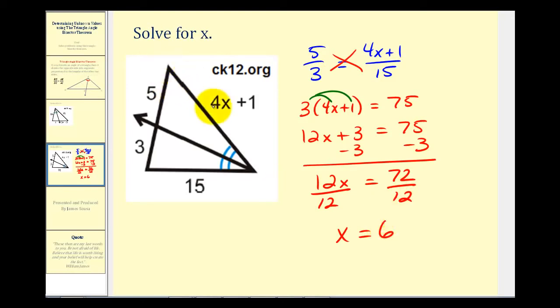So if we were asked to determine the length of this side, we would substitute 6 for X. We'd have 4 times 6 plus 1. So this side of the triangle would be 25 units long. Let's go ahead and take a look at one more example.